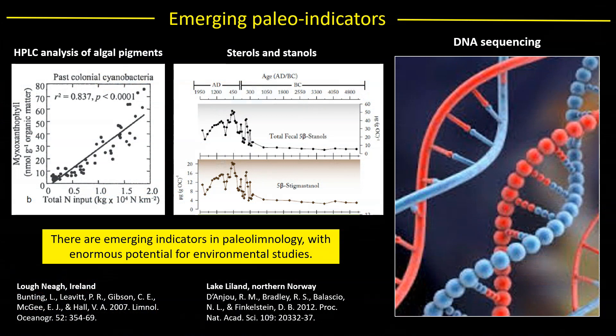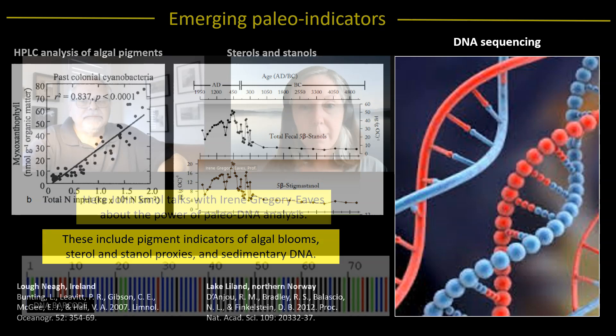There are emerging indicators in paleolimnology with enormous potential for environmental studies. These include pigment indicators of algal blooms, sterol and stanol proxies, and sedimentary DNA.